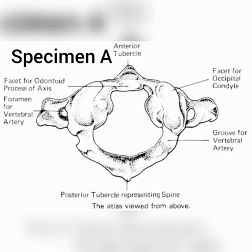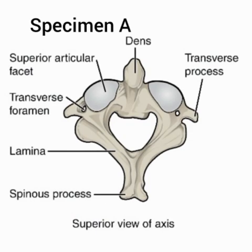We are going to start with the first specimen, which is specimen A — the cervical vertebra. The cervical vertebra is found in the neck region. It is seven in number in man, and also for other mammals. The first cervical vertebra is called the atlas and the second one is called the axis, as you can see in the diagram.